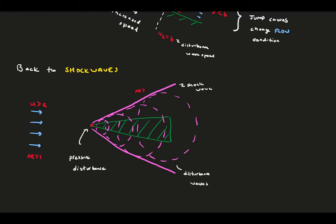Upstream of the wave, the flow knows nothing about the wedge because it cannot feel any of the typical disturbances. Once it hits the wave, it violently changes flow condition. The velocity rapidly decreases, which results in a dramatic increase in pressure, temperature, and flow density. Today, we'll work to better understand this behavior and derive equations to predict the new flow conditions behind the shock.